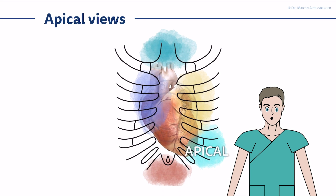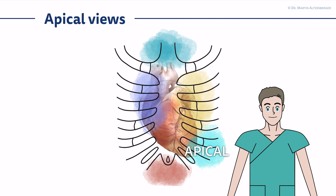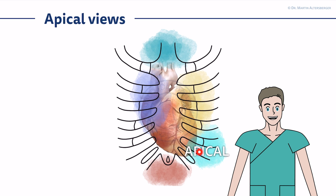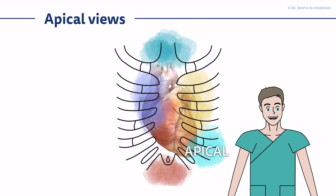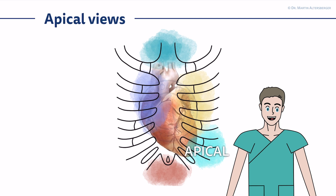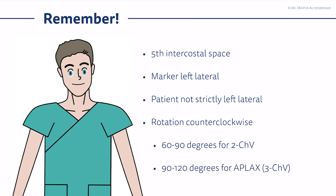How to achieve the views? You stay at the apical parts of the left ventricle. This is a highly variable view. You start with the four-chamber view, the marker pointing towards the left side of the patient. The patient is not entirely left lateral, and then you start with a rotational movement counterclockwise, always keeping the structures you want to see in your field of view.